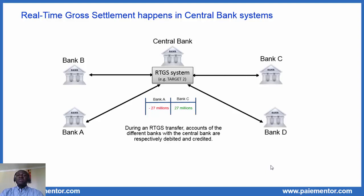For example, it can be the European Central Bank that operates Target 2, or the Federal Reserve in the United States of America that operates the Fedwire system, or the Riksbank that operates the Riksbank system in Sweden, and so on. A transfer of 27 million euro between bank A and bank C is illustrated in the picture. All the banks have an account with the central bank. Bank A sends the instruction to the RTGS system. The central bank checks if bank A has sufficient funds on its account to execute the fund transfer. If yes, the transfer is carried out instantaneously — bank A's account is debited and bank C's account is credited. In case there are insufficient funds on the account of bank A, the payment will go to a waiting or pending status and will be executed later when funds become available.